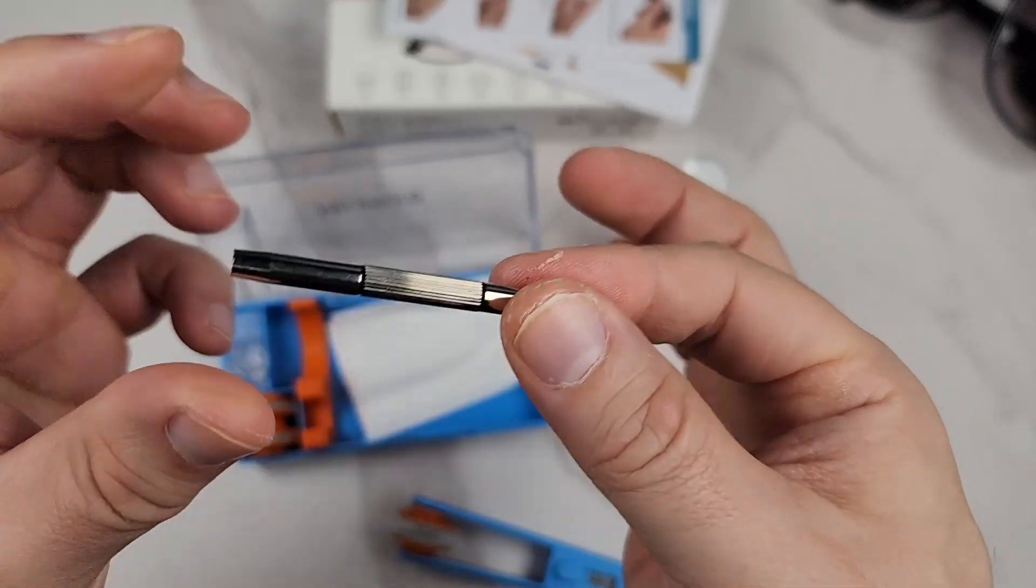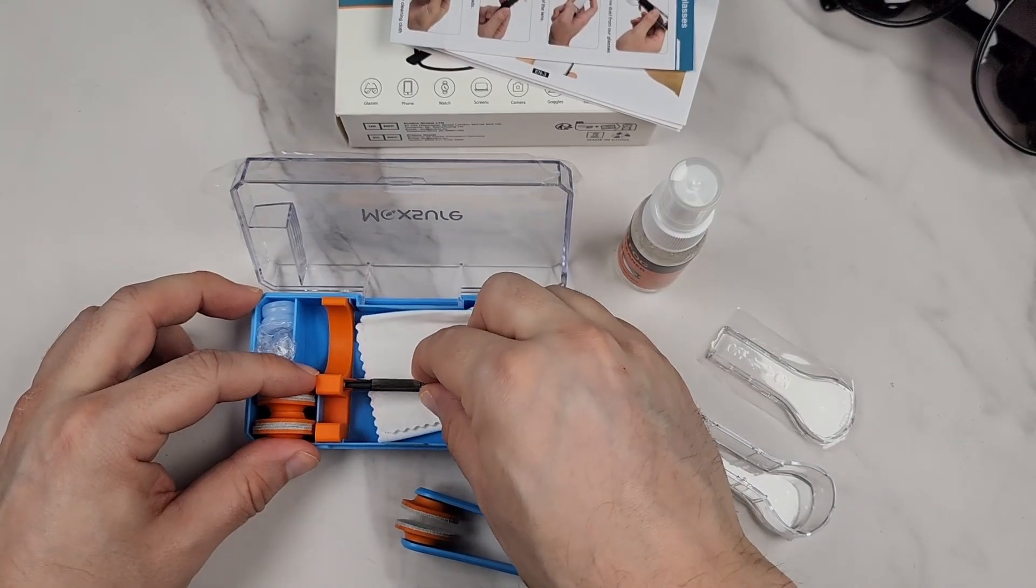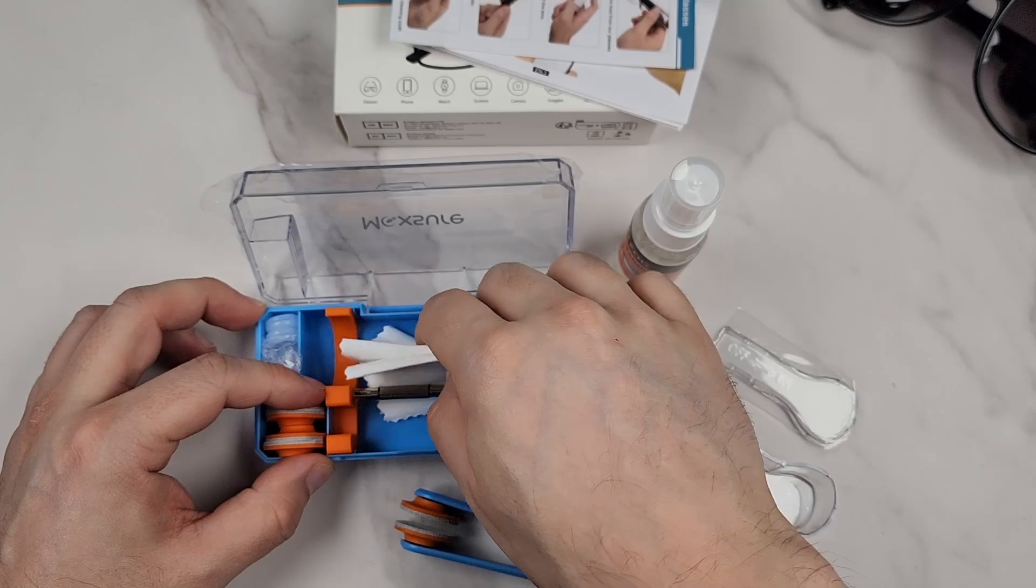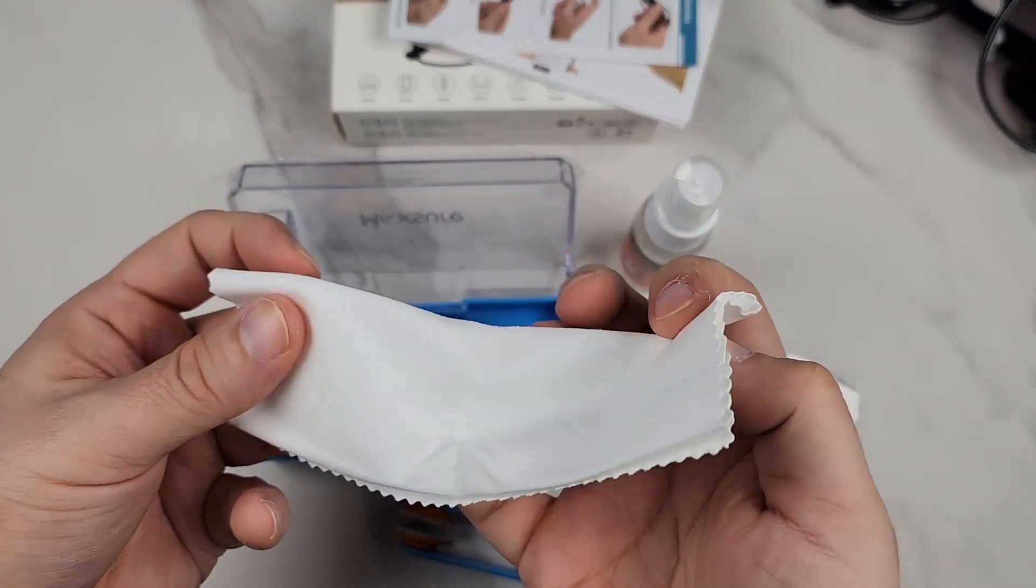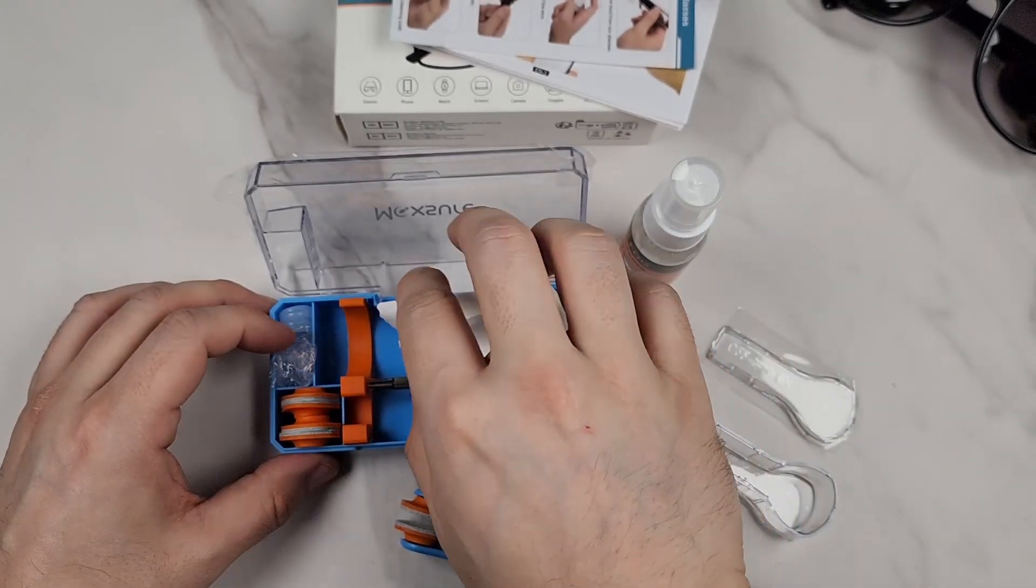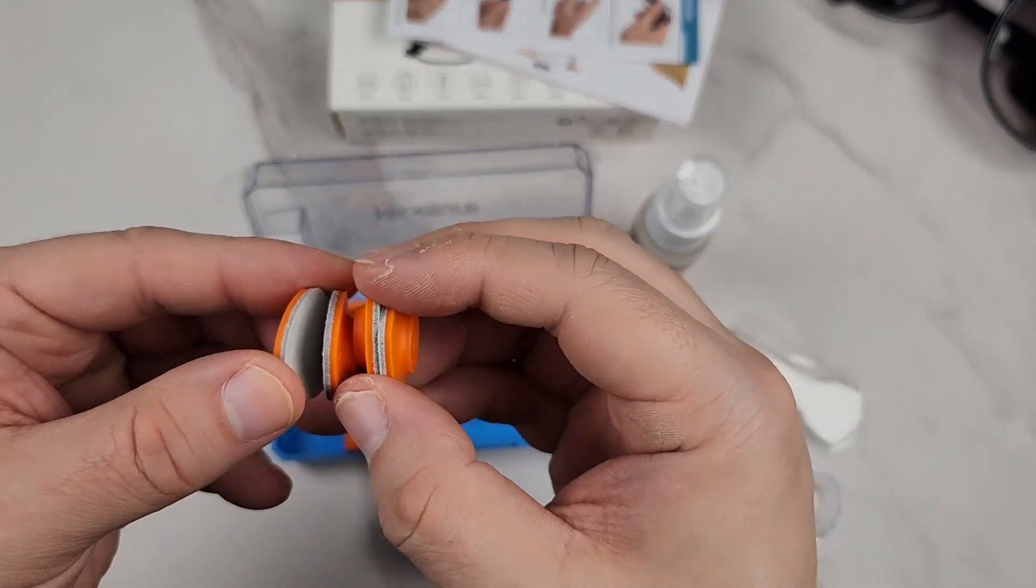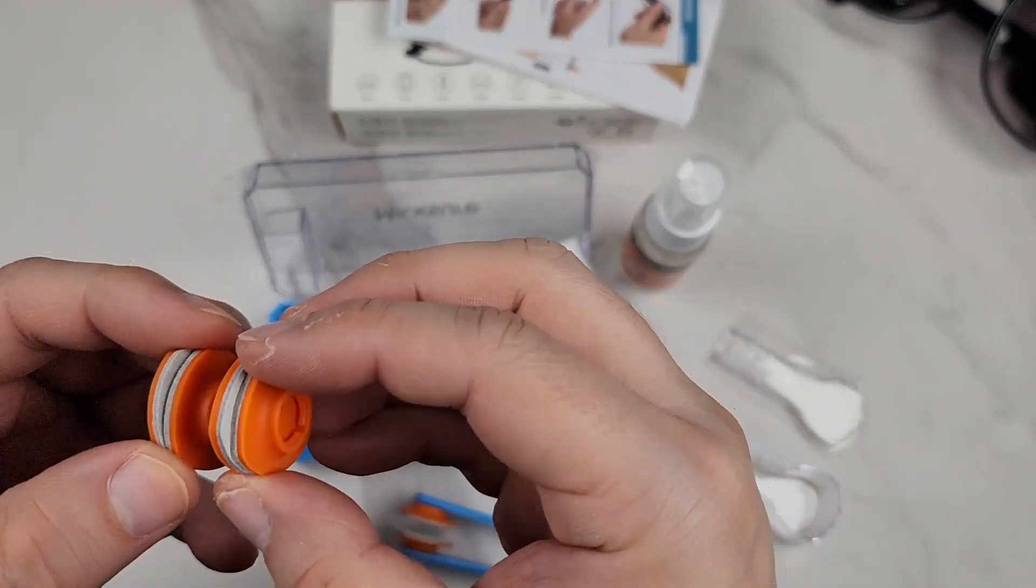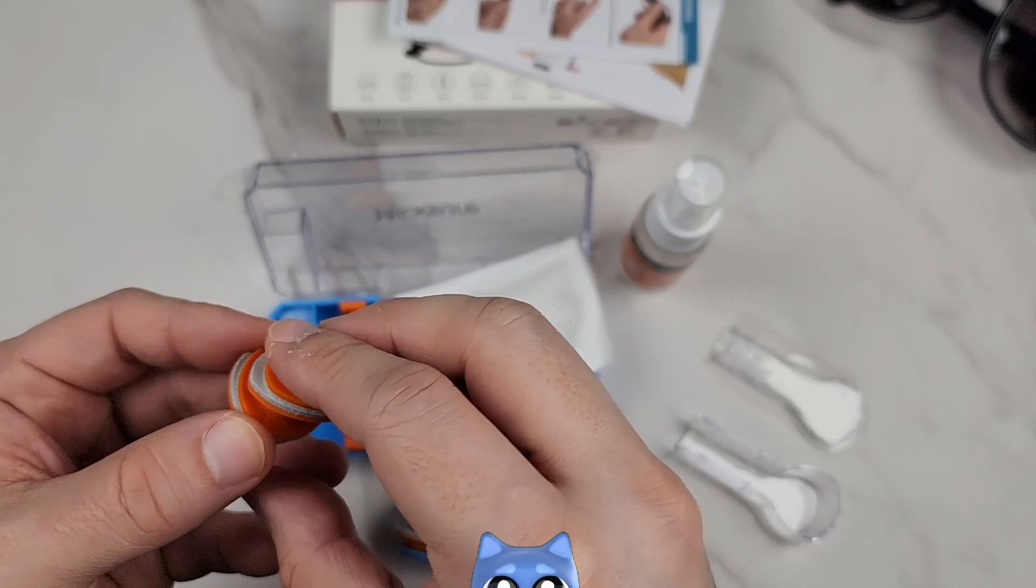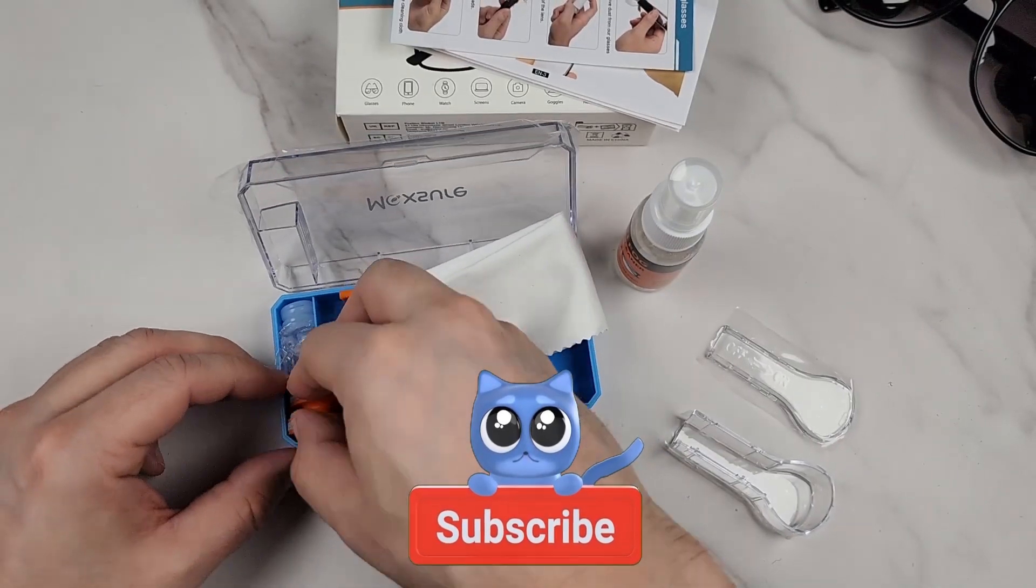You get a nice little microfiber cleaning cloth. They give you additional squeegees, so whenever they get messed up you've got two extra ones here.